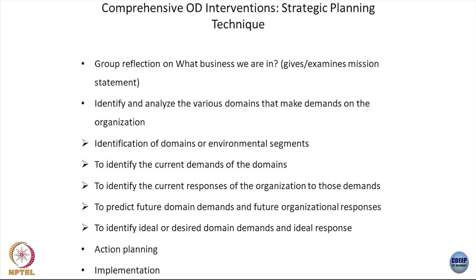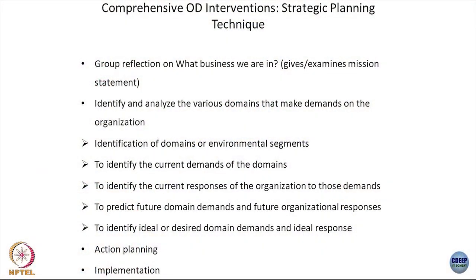In the strategic planning technique, which is similar to the future search conference, the first step involves group reflection on what business we are in by examining the mission statement — fundamental thinking about identity and the reason for existence as an organization. Then groups identify and analyze the various domains that make demands on the organization. For example, should an oil company identify itself just as an oil company or as an energy company? In this context, they identify the domain, the current demands of that domain, and the organization's current response to those domains.